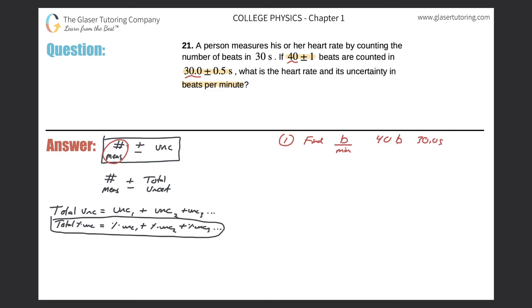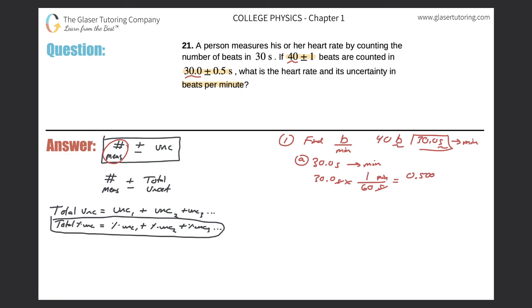I know the beats and I know the seconds, so I can find minutes. If I take the 30 seconds and convert that into minutes, that allows me to find beats per minute. Taking 30.0 seconds and multiplying by (1 minute / 60 seconds), the seconds cancel, giving us 0.500 minutes.